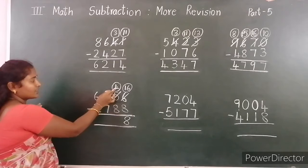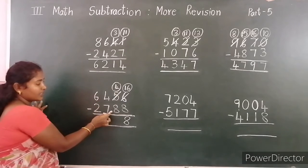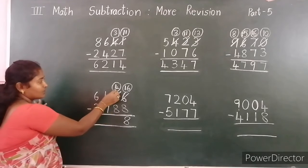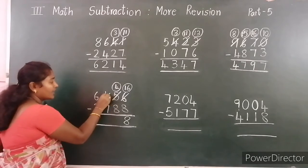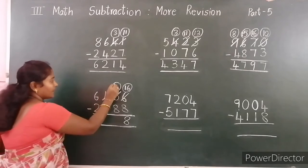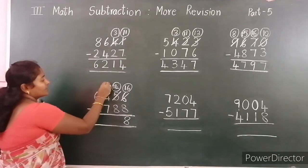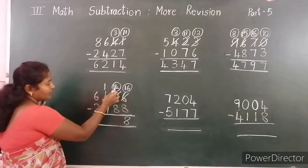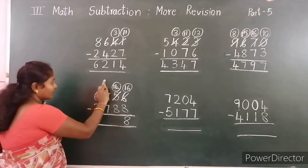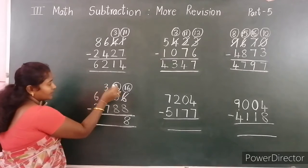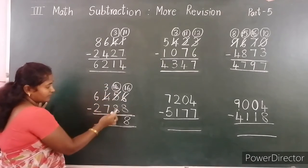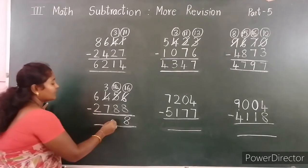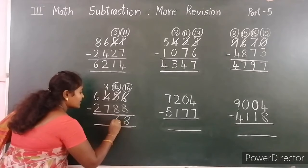Now tens place: 4. 4 minus 8 — 4 is smaller than 8, so borrow from the hundreds place. Now 14, here 3 left. 14 minus 8 — the difference is 6.